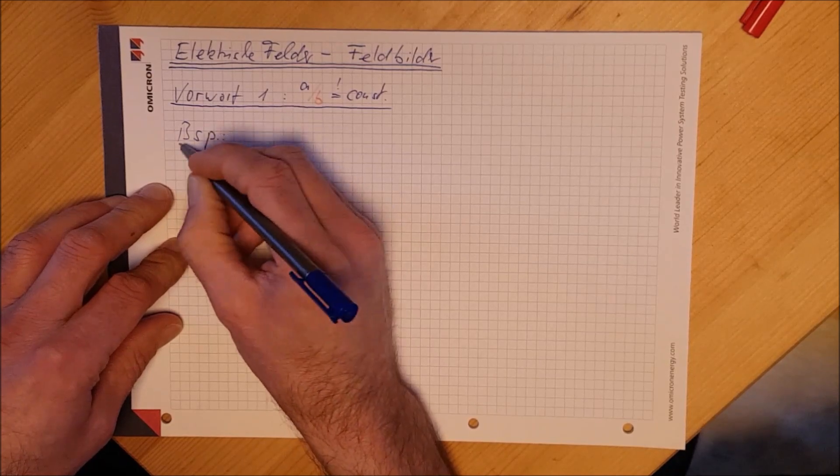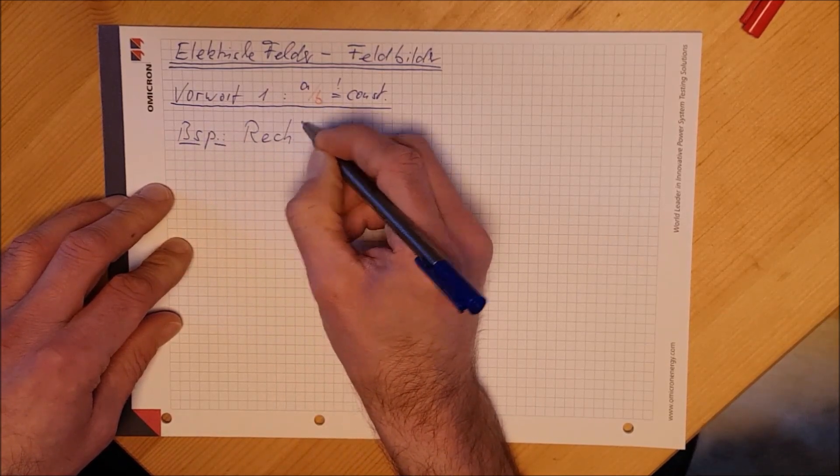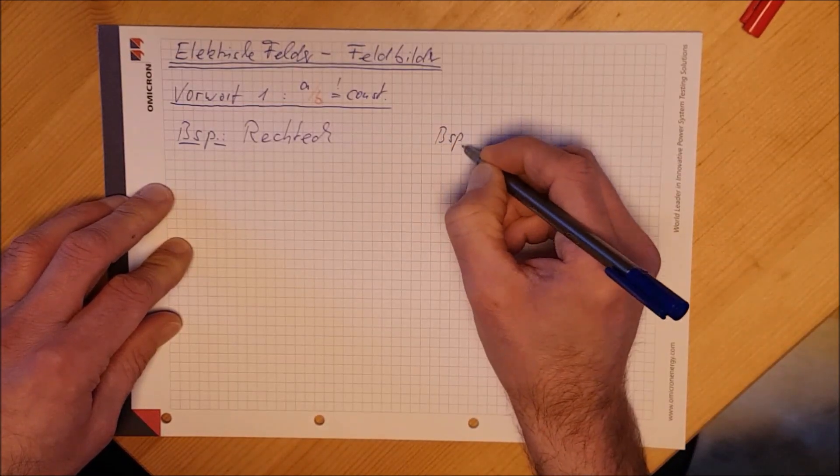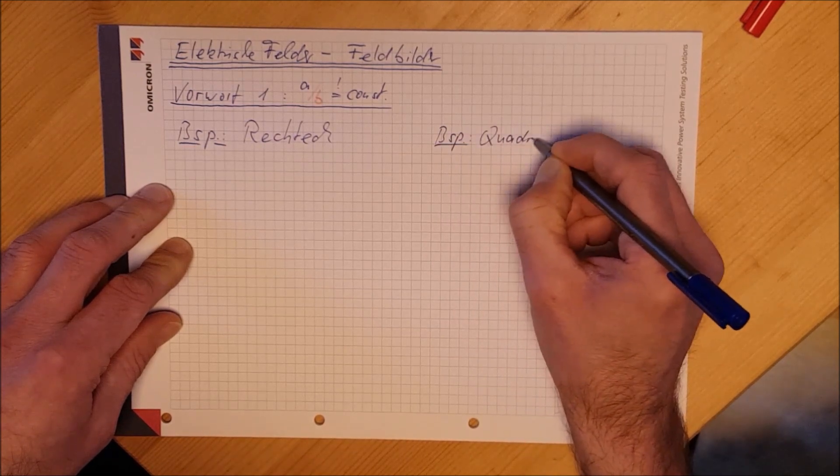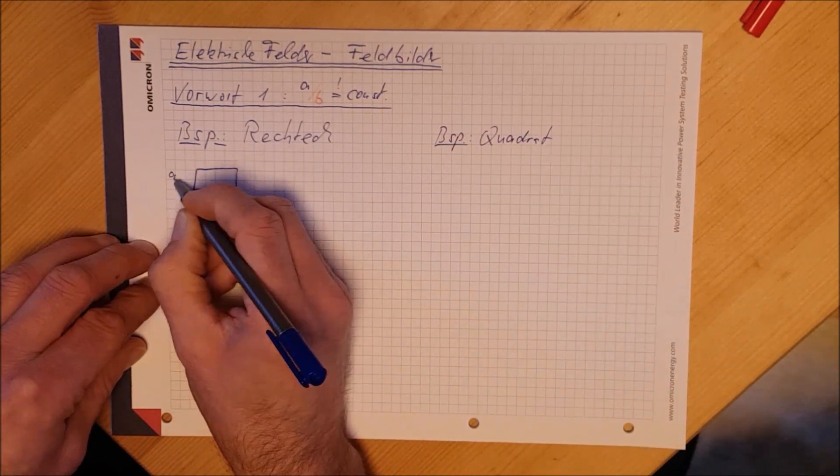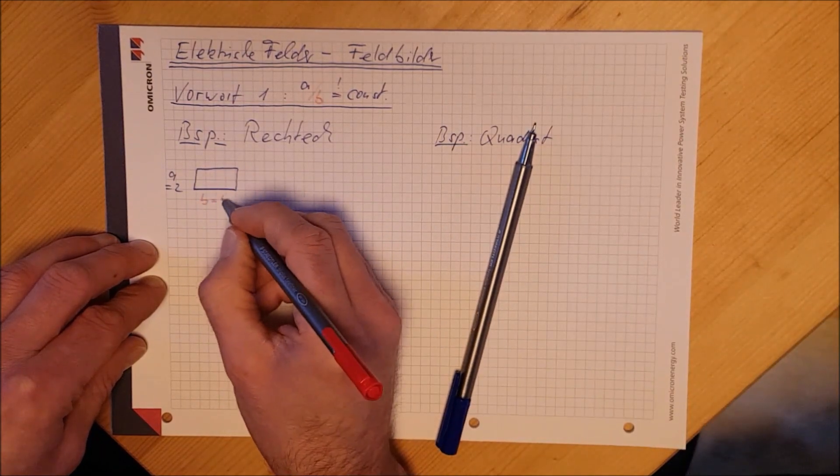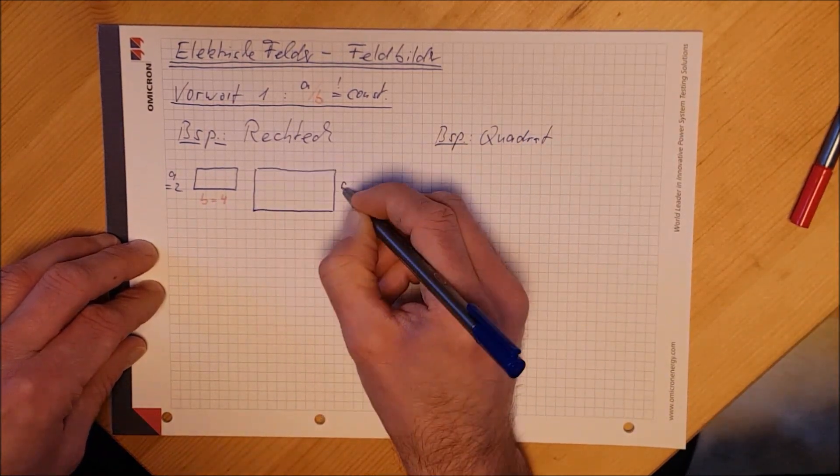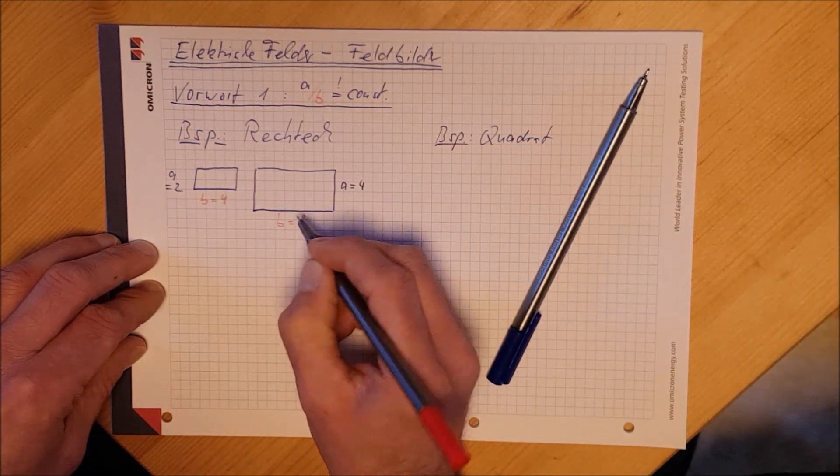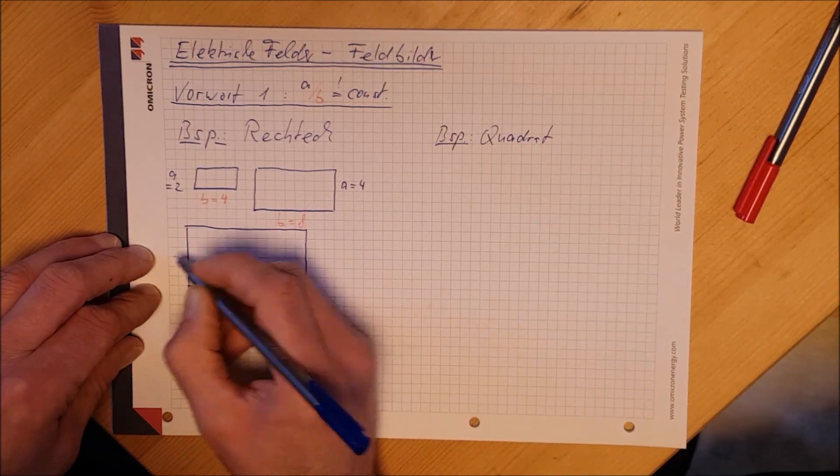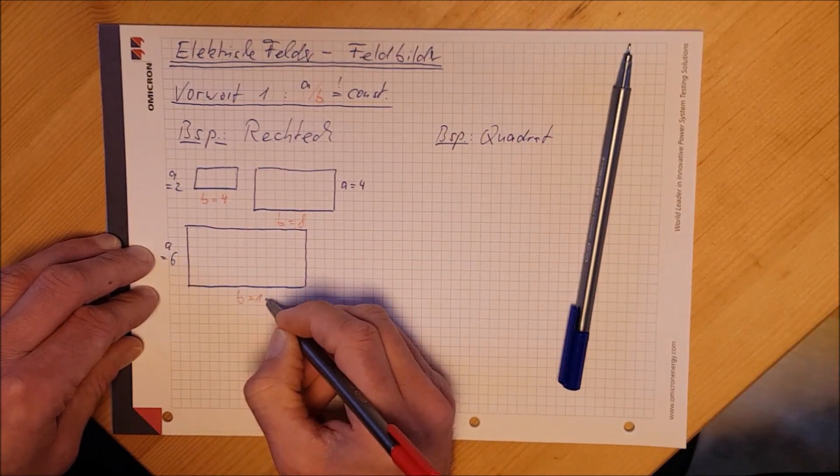Hier geht es darum, zum Beispiel bei Rechtecken oder auch bei Quadraten Strukturen zu zeichnen, die ein identisches Seitenverhältnis aufweisen. Zum Beispiel ein Rechteck mit dem Seitenverhältnis 2 zu 4 oder hier ein Rechteck mit dem Seitenverhältnis 4 zu 8 oder ein großes Rechteck mit dem Seitenverhältnis 6 zu 12.